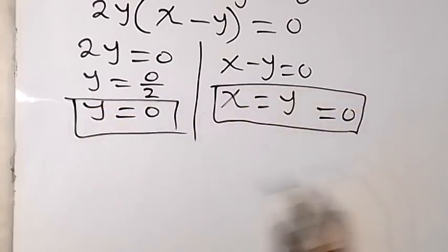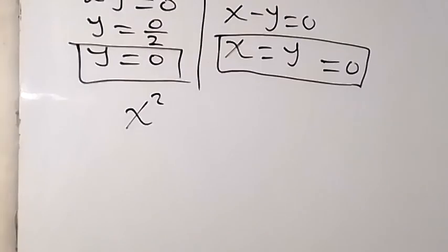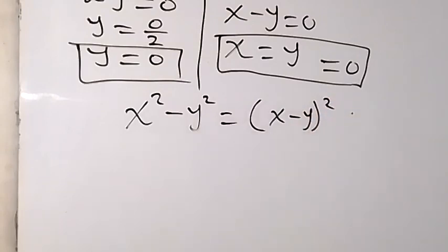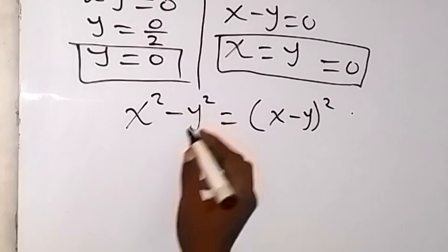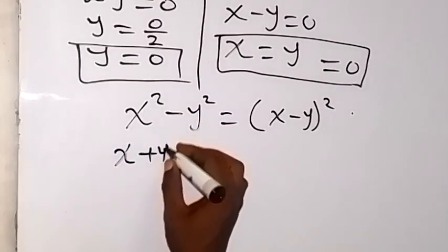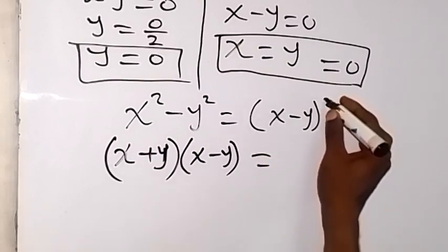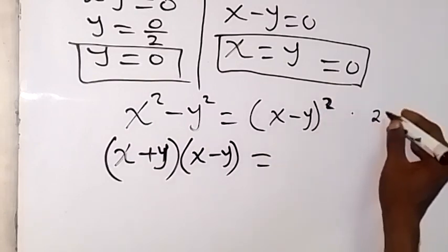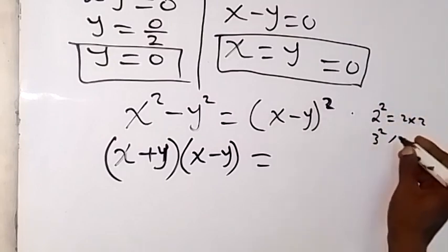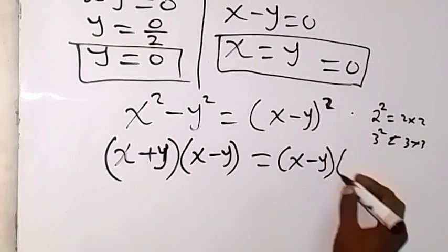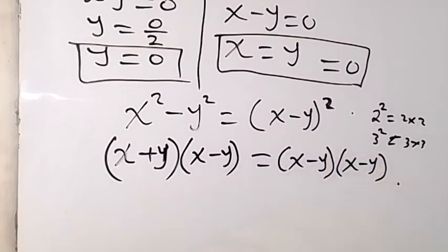We can also solve this another way. From x squared minus y squared equals (x minus y) squared, we can write the left side as a difference of two squares: (x + y)(x minus y). The right side, (x minus y) squared, means (x minus y) times (x minus y). We then cancel one (x minus y) from both sides by dividing through by (x minus y).